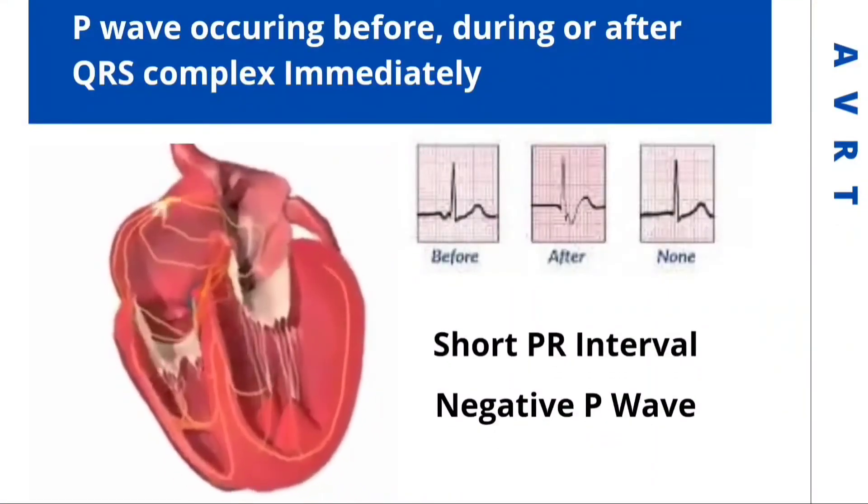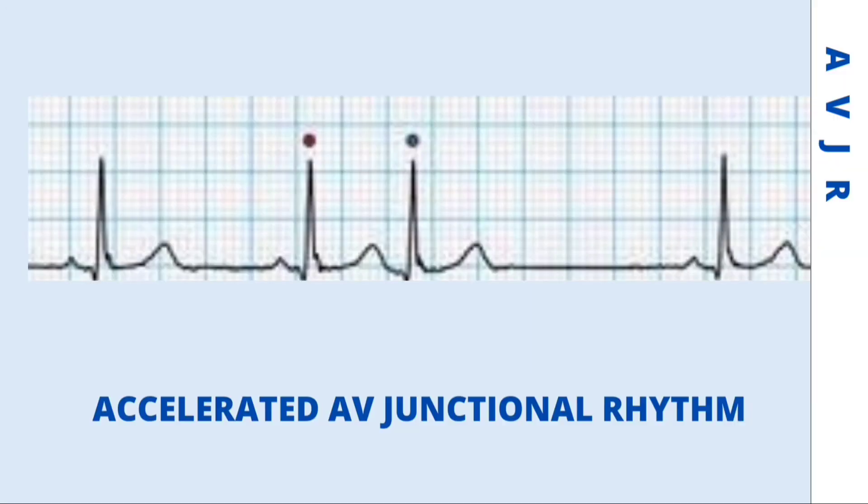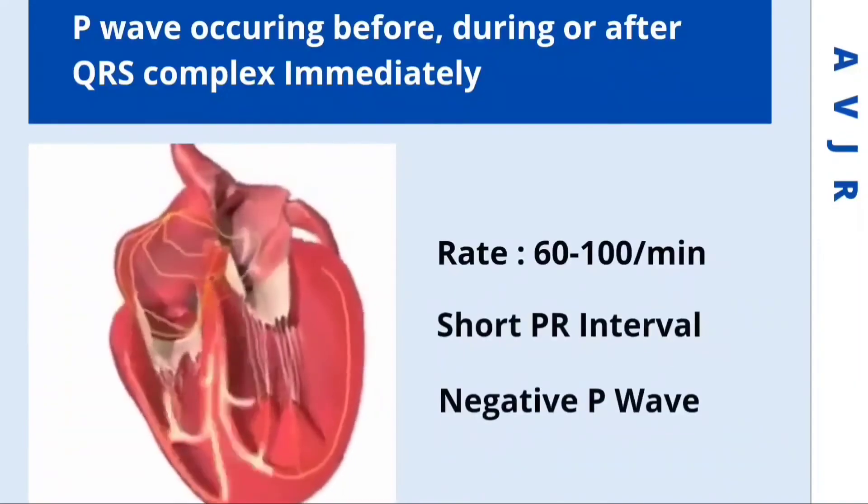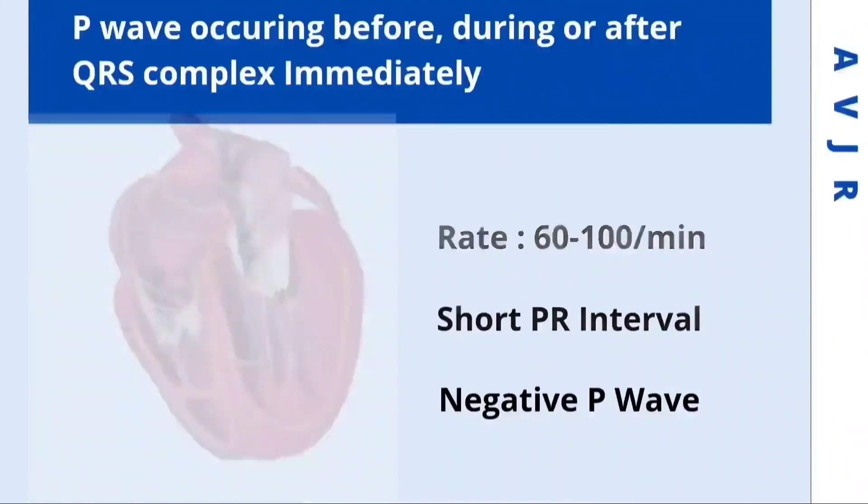Accelerated AV junctional rhythm is characterized by QRS complexes of AV nodal origin that occur at a regular rate of 60 to 100 per minute. These represent a secondary pacemaker and may have resultant retrograde P waves, with negative P waves in inferior leads with a short PR interval. This dysrhythmia is similar to AV junctional bradycardia, except faster.